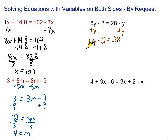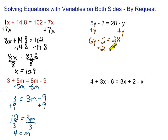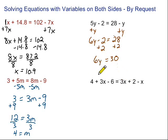Now we have our y, so we want to get rid of the other stuff on this side. The equals sign is sort of like a boundary. We want to get rid of that minus 2 — do the opposite, so plus 2 on both sides. Bring down what we have left: 6y equals 28 plus 2, which is 30. We've got to get rid of that 6 — it's being multiplied by the y, so we divide by 6 on both sides. The 6's are gone and we're left with y equals 30 divided by 6, which is 5.